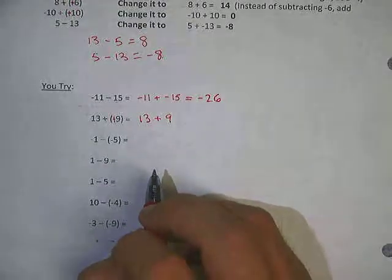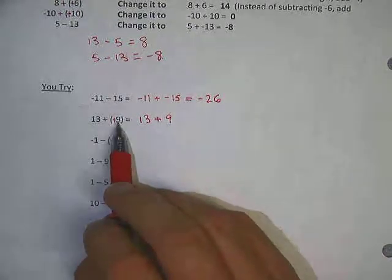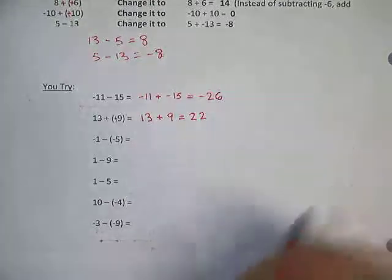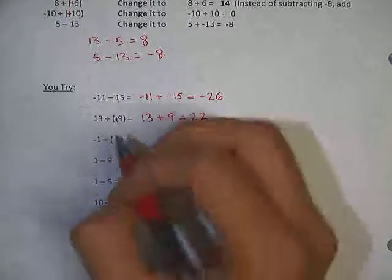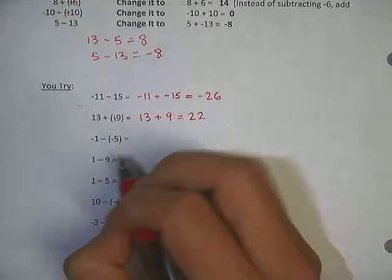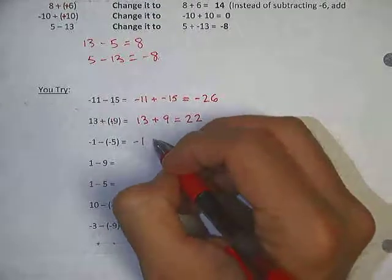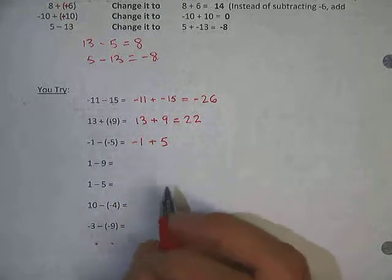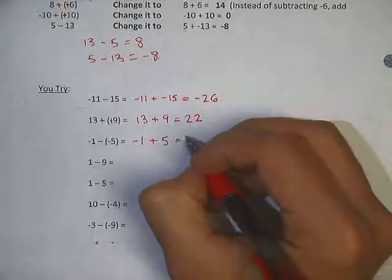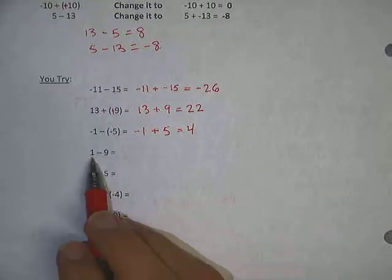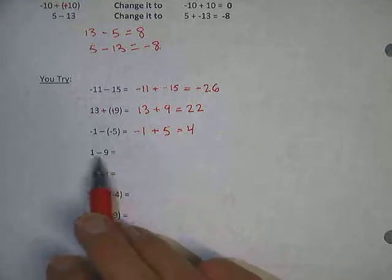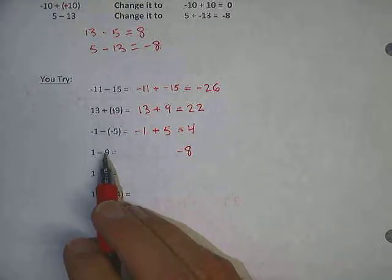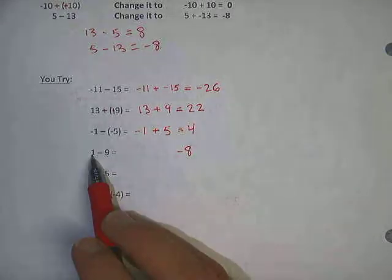Next: 13 minus negative 9. When I see minus a negative, my first thought is to go plus plus. Keep 13, change subtraction to addition, and negative 9 becomes positive 9. So 13 minus negative 9 is the same as 13 plus 9, which is 22. Next one: I see minus a negative — plus plus again. Rewrite it: negative 1, keep, change subtraction to addition, change negative to positive — negative 1 plus 5. The negative cancels one positive, and it's positive 4.